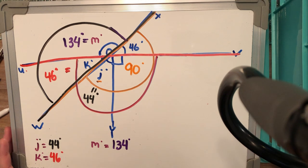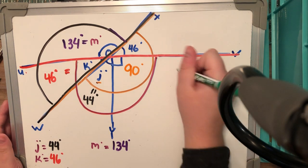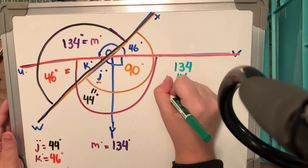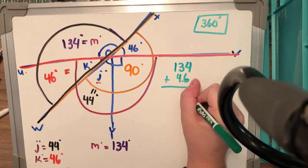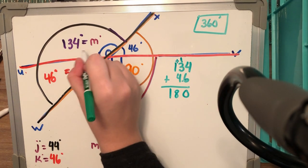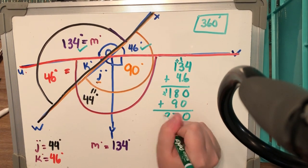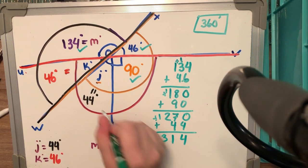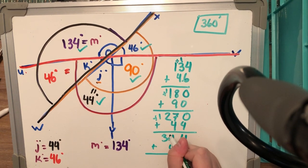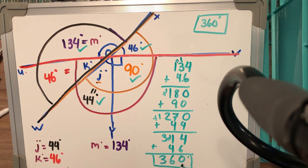Looking at all of this together — it still makes a full rotation of 360 degrees. I'm going to add all the angles to check: 134 plus 46 plus 90 plus 46 plus 44 equals 360 degrees. All of these angle measures are correct and I solved the problem correctly. Until the next video — this was a review on supplementary and complementary angles and all the types of problems we did in the classroom. Bye guys!